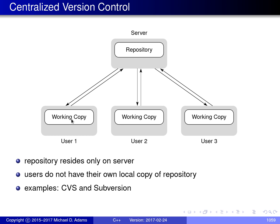In a centralized version control system, there's only one copy of the repository, and it resides on a server. The individual software developers do not have their own local copy of the repository — they only have a working copy, which is a very small subset of the information in the repository, corresponding to some particular version of the software they're working with. Some examples of centralized systems are CVS (concurrent version system) and subversion.